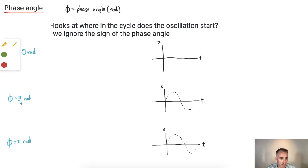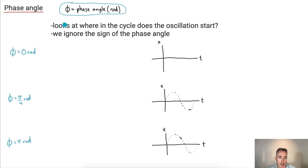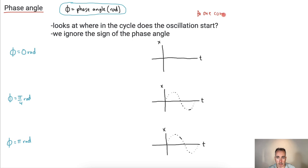So we're going to define this thing called a phase angle. This phi is the phase angle, measured in radians. What we're going to be doing is looking at where in the cycle the oscillation starts, and putting everything in terms of radians. It's important to remember that one complete cycle, or one complete period, is equal to two pi radians. That's a key thing to remember.